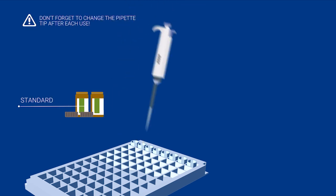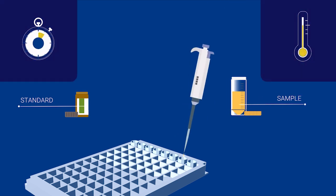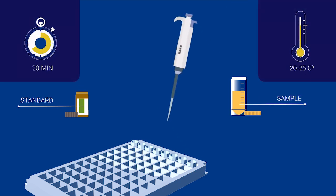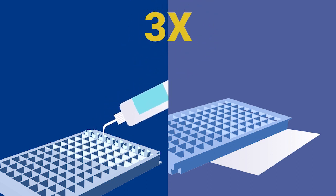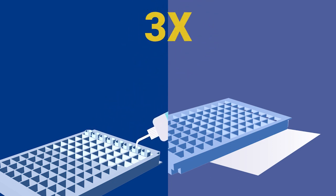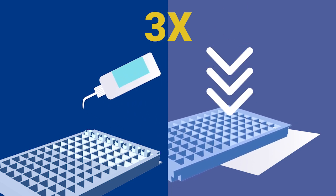Pipette sample extracts and standard solutions into the micro-titer wells and incubate for 20 minutes at room temperature. Wash the wells three times with the supplied washing buffer. Tap the plate until the wells are dry.